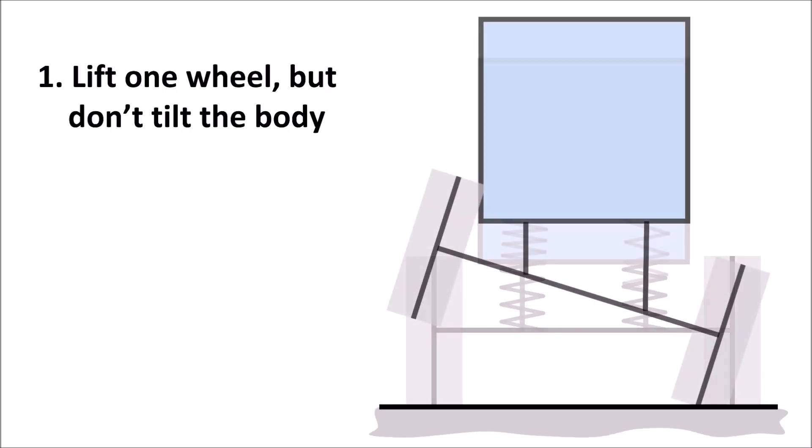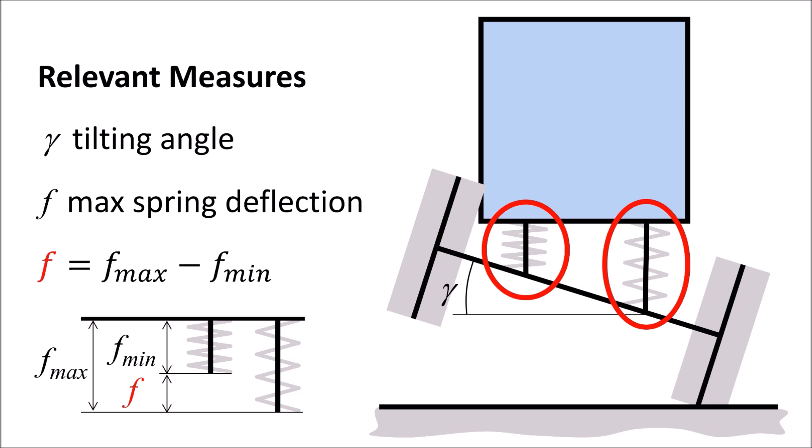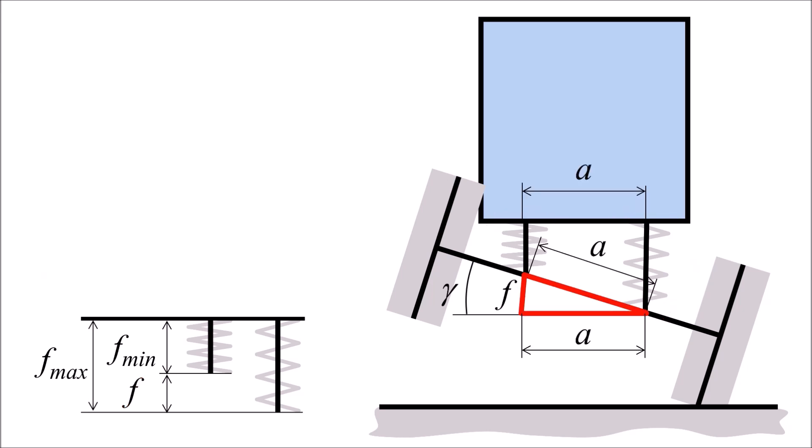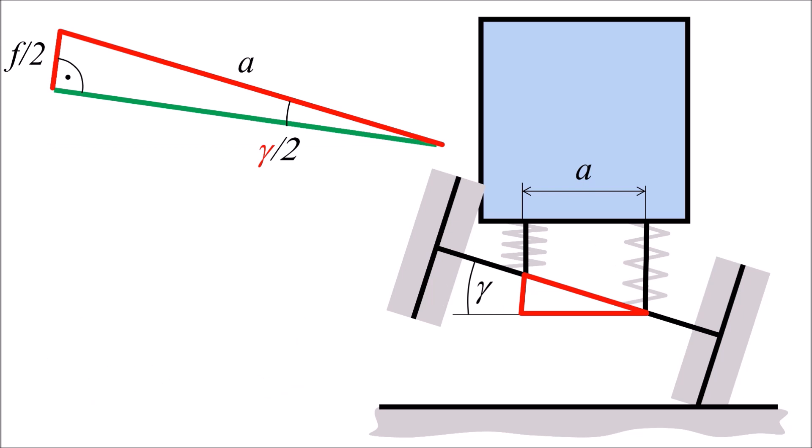First, let's lift one wheel while keeping the body horizontal. The tilt angle gamma is the angle that appears when maximally flexing and extending the left spring and right spring respectively. Gamma can be computed by the sine rule as we know all lengths of this rectangular triangle.